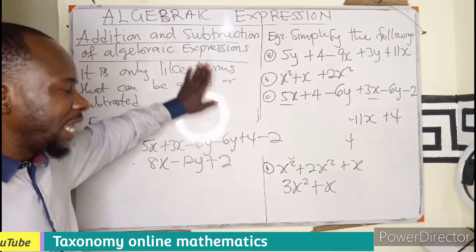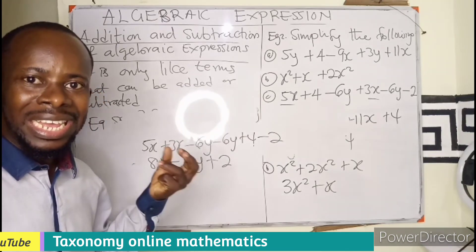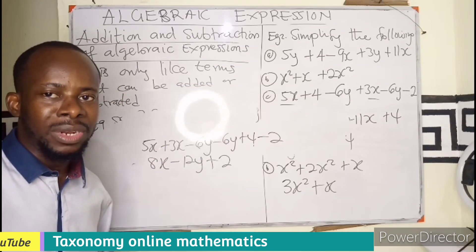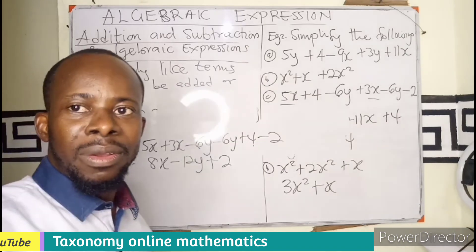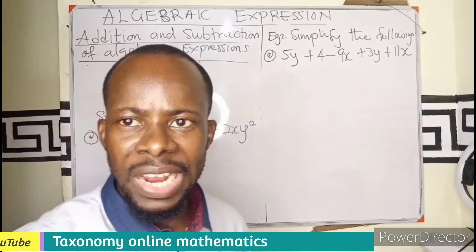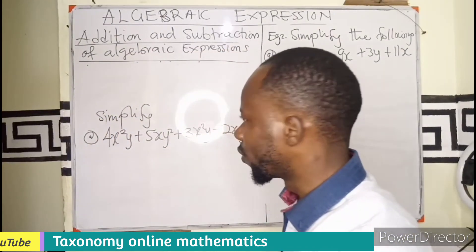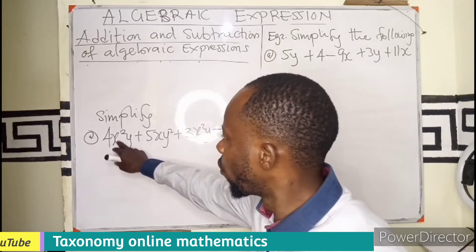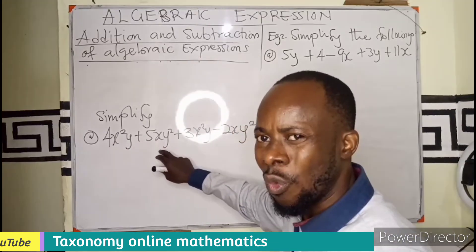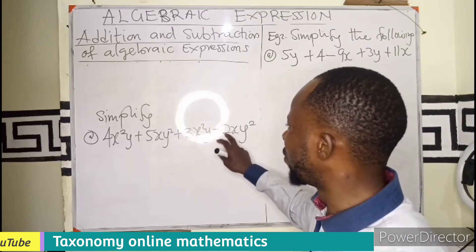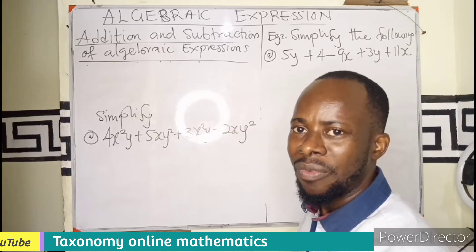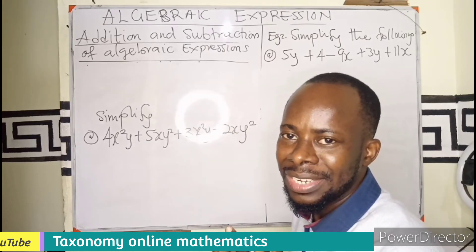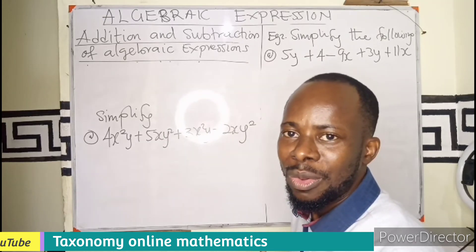So this is on algebraic expression — addition and subtraction of algebraic expressions. If you have any question, send it to the comment section and I will look at it. Here is a homework problem for you: 4X squared Y plus 5XY squared plus 3X squared Y minus 2XY squared. Try and provide an answer and send it to the comment section.